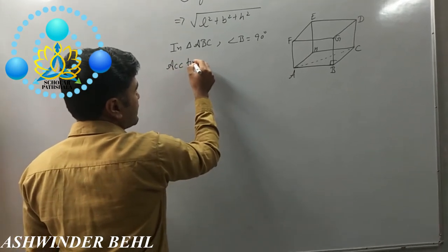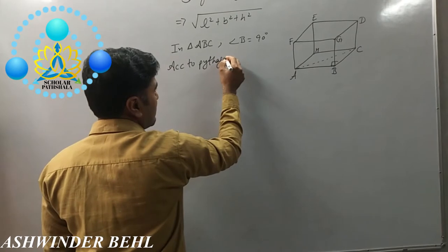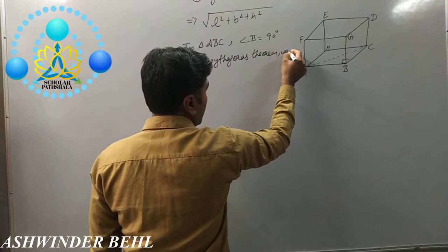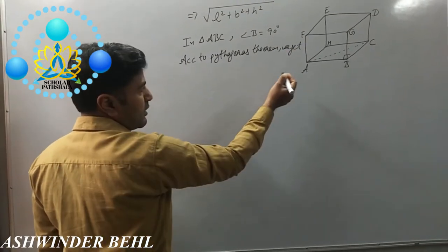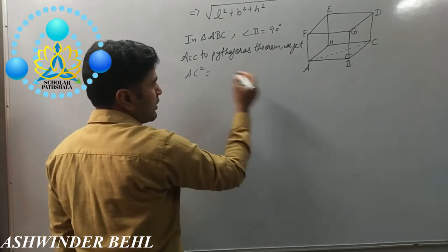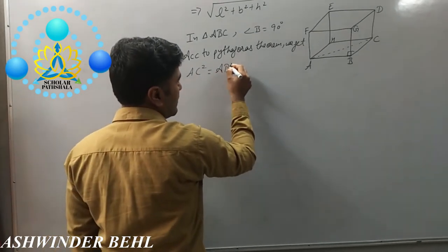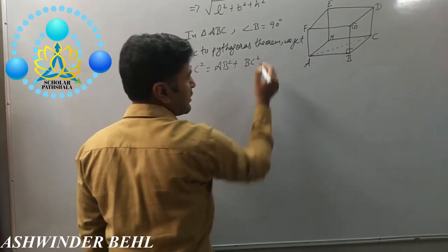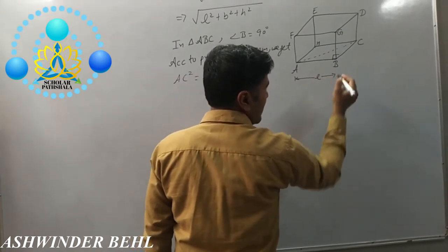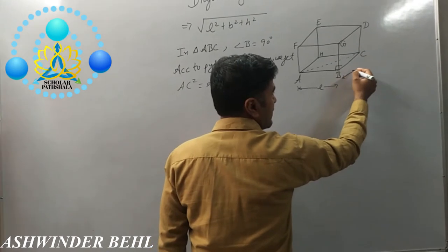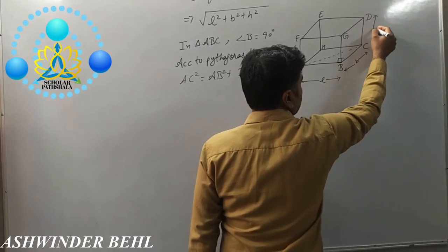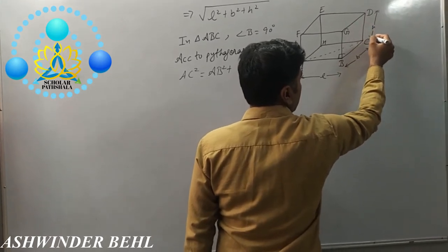According to Pythagoras theorem, AC² = AB² + BC². Now we suppose that AB is L, BC is B, and CD is H.